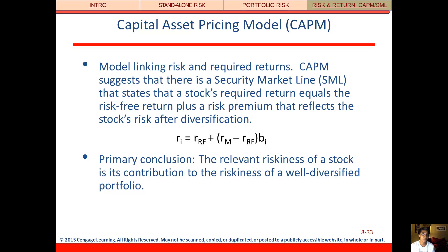Let's wrap up our discussion of risk and return by talking about the CAPM and SML. CAPM is the capital asset pricing model, and it links risk and required return. It suggests there's a security market line, or the SML, that states a stock's required return — RI — is equal to the risk-free return, RRF, plus a risk premium that reflects the stock's risk after diversification.